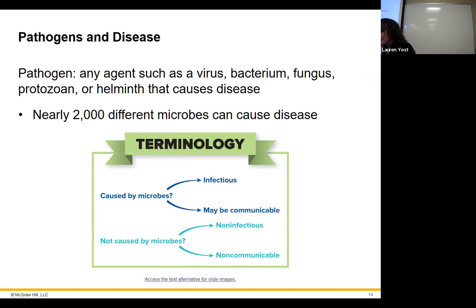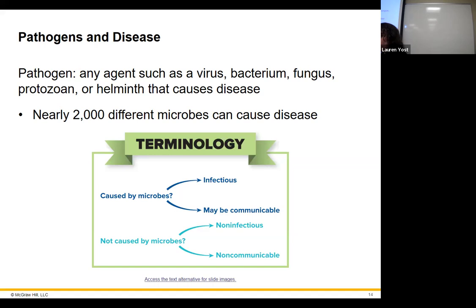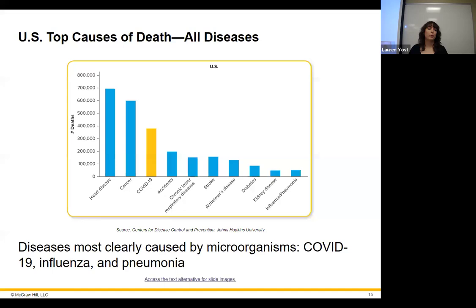Any disease caused by something transmissible is caused by pathogens — microorganisms that cause disease. Not all diseases are caused by pathogens, though. Diabetes, heart disease, and stroke are not caused by microbes — and going into nursing, you'll need to be aware of both. The top causes of death in the US as of 2022 are heart disease, cancer, and then COVID — more people were dying from COVID than from stroke or diabetes.